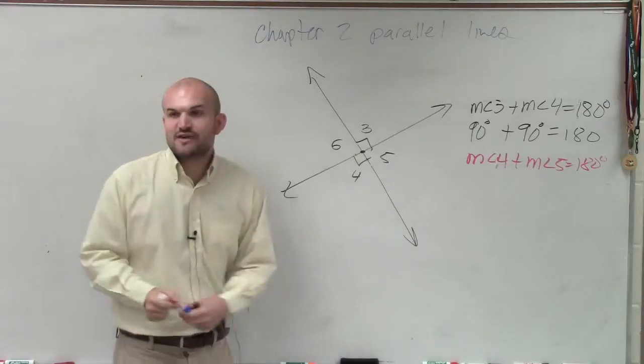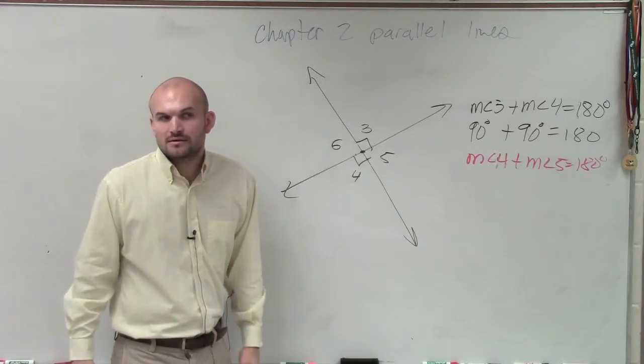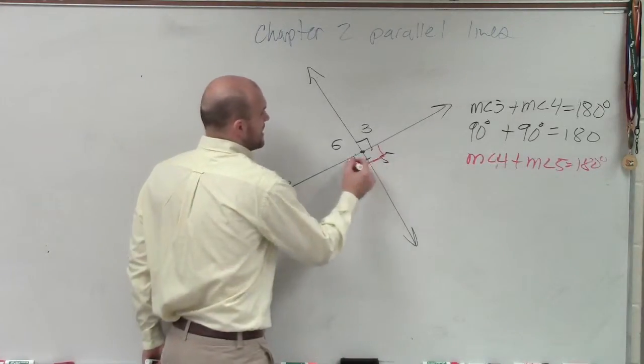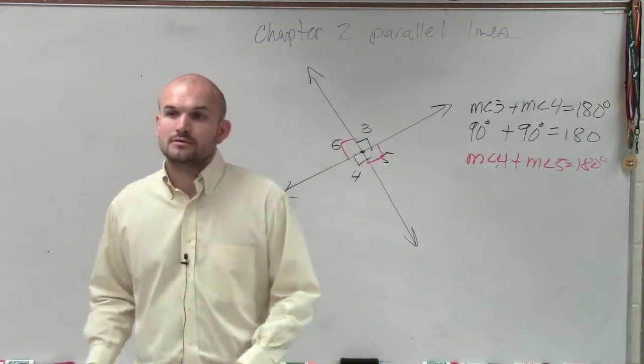So since that equals 180, what does the measure of angle five have to be? 90. And how do we represent that 90 with the box? Yes.